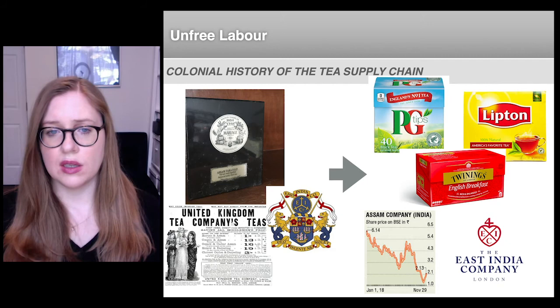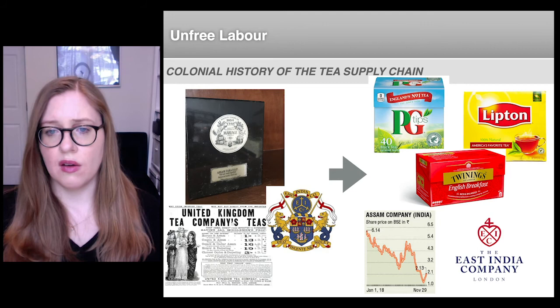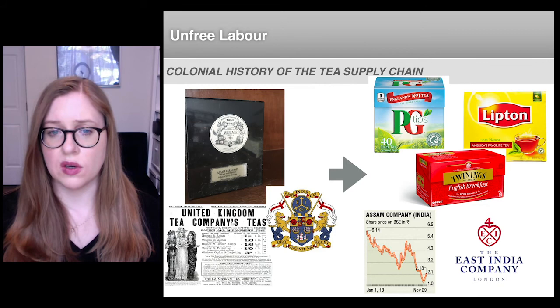The working conditions on these plantations were brutal, as the early European tea companies and planters imported practices that were being used on British-owned slave plantations in the Caribbean and elsewhere. European planters obtained permission from the government, within this indentured regime, to physically coerce and use violence against tea workers, for instance as punishment for low productivity or as retribution for attempted runaways.